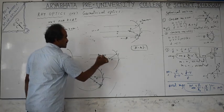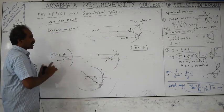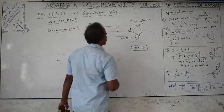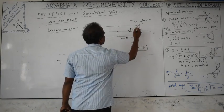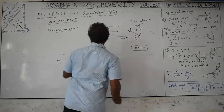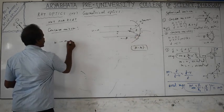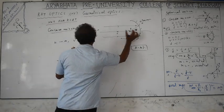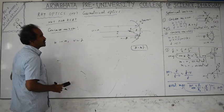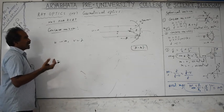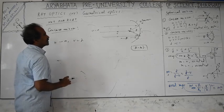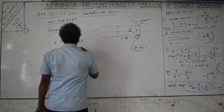For a concave mirror with object at infinity, parallel rays meet at the focus F after reflection. So if u is infinity, the image distance v equals f — image forms at the focus. The image is real and of very small dimension. This is like focusing distant light rays, such as from stars or the sun, to a point. Light rays from beyond 2f give real images at the focus.